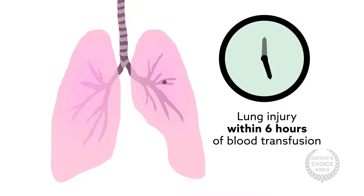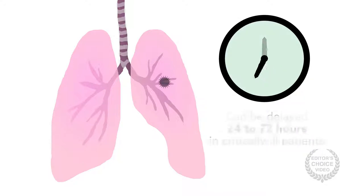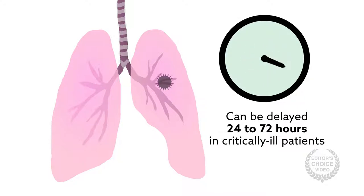Classically, TRALI is defined as a lung injury occurring within six hours of a blood transfusion. Onset can also be delayed 24 to 72 hours in critically ill patients in the ICU or OR.